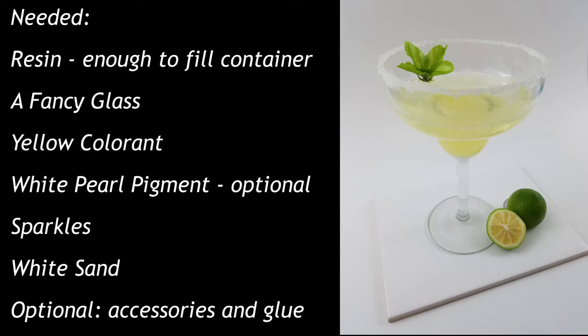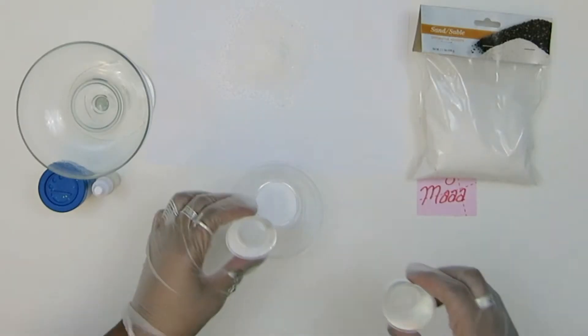For this project you're going to need resin, a fancy glass, whatever you're using to color the resin, pigment, sparkles, white sand, and any optional accessories you want.